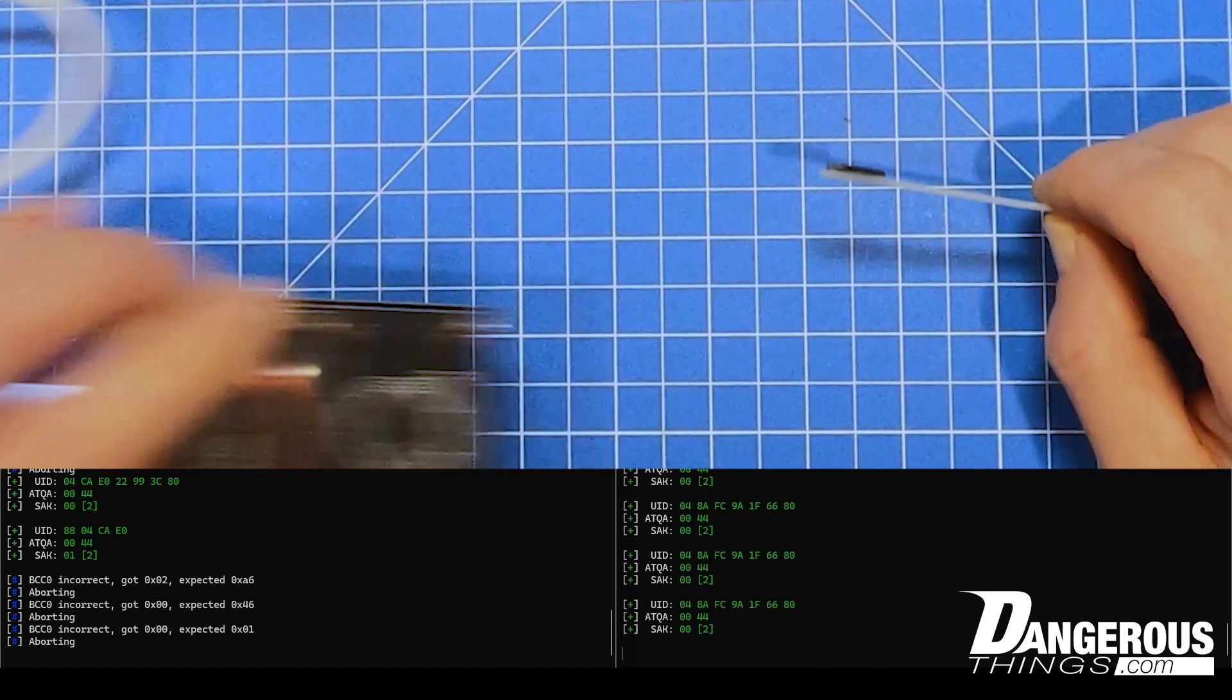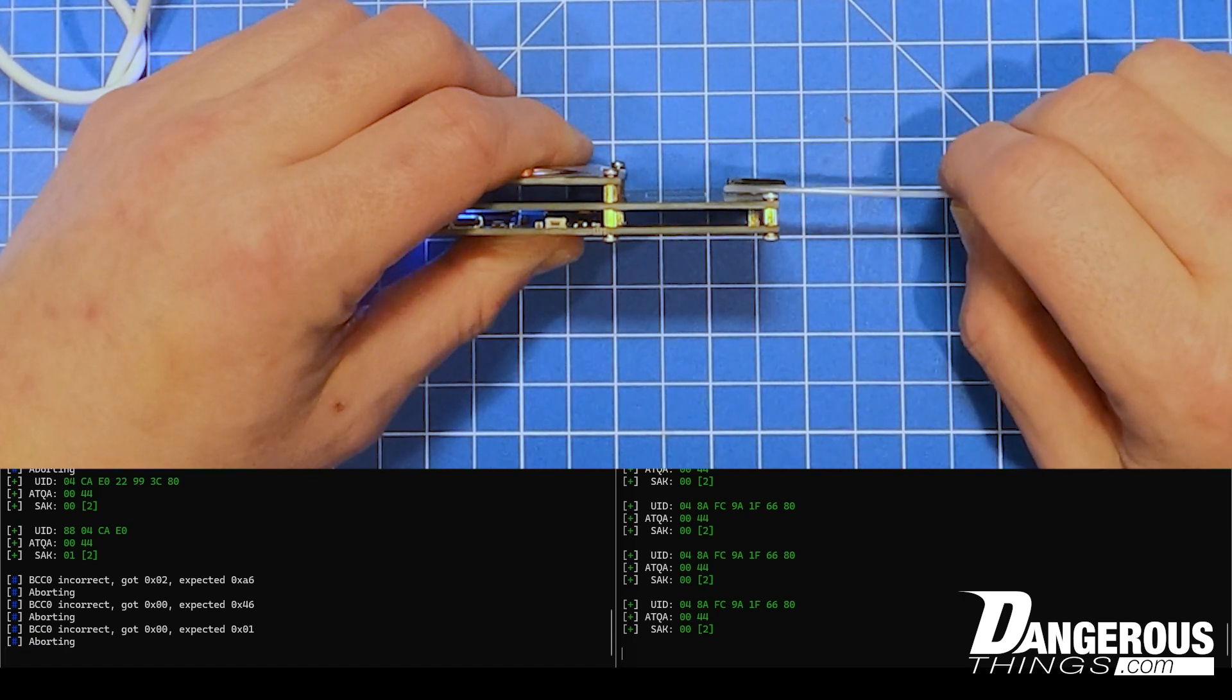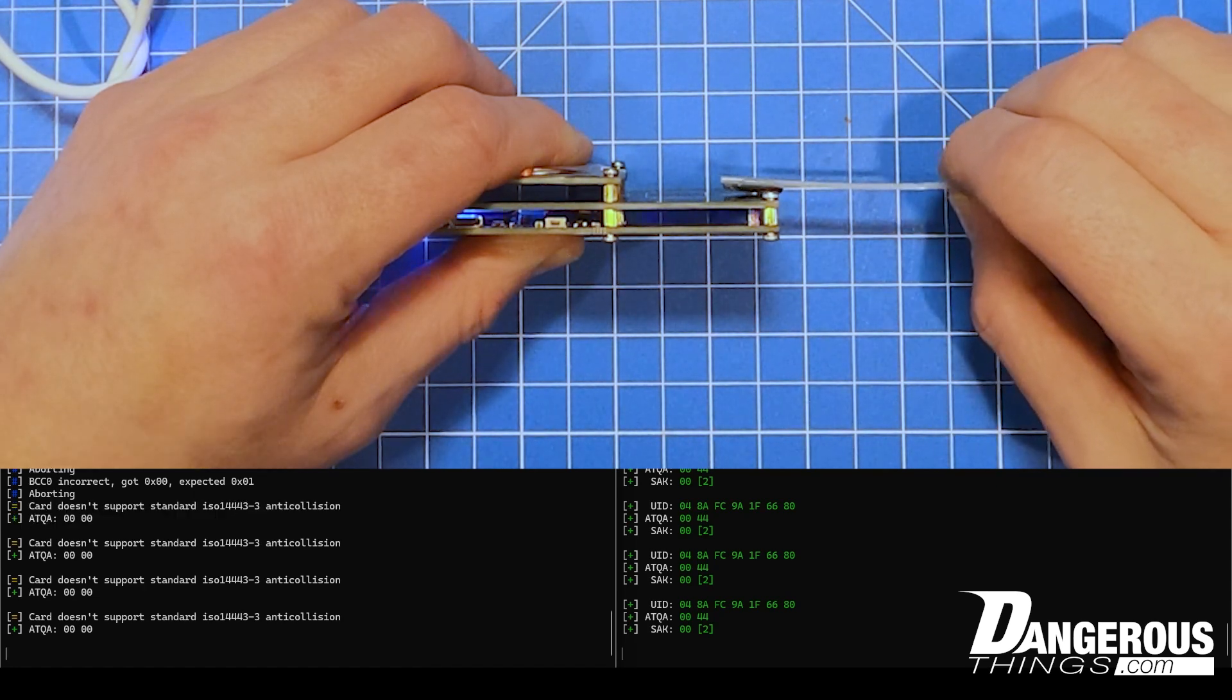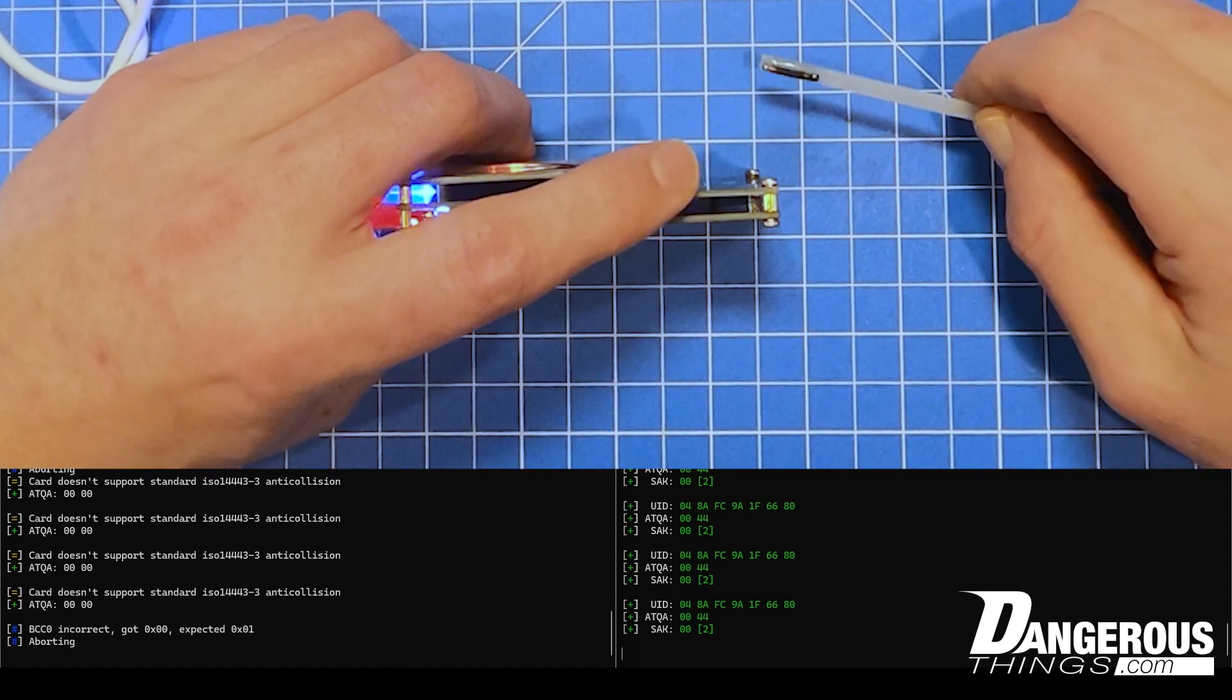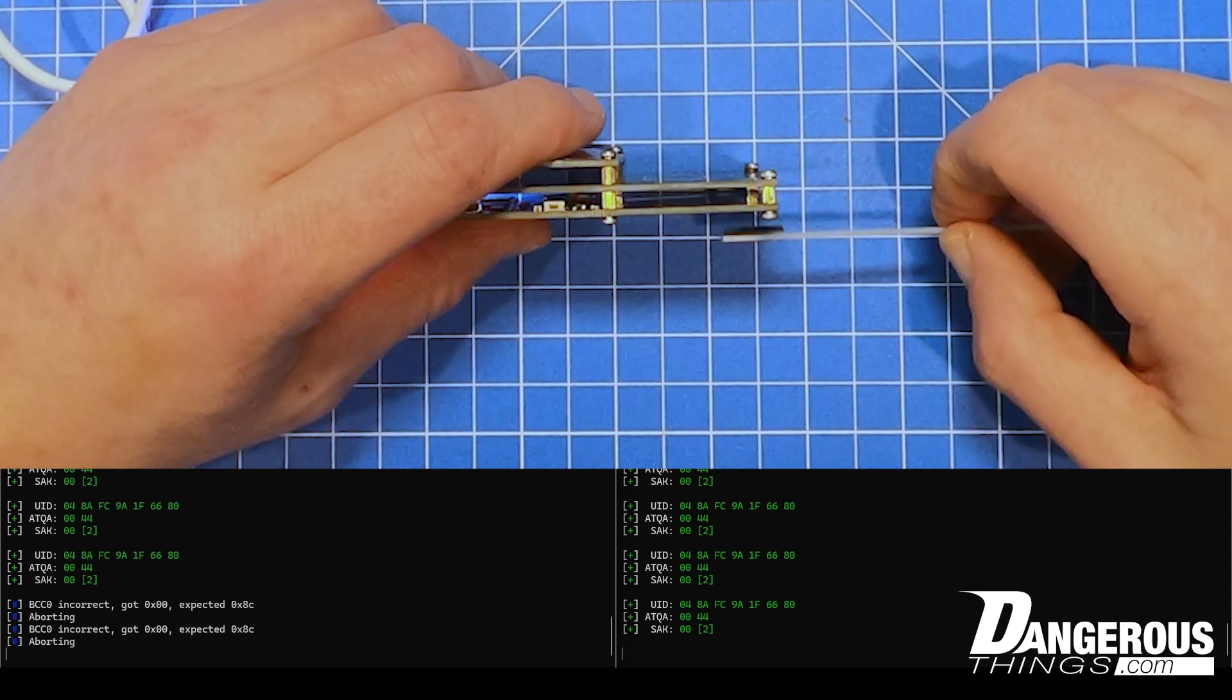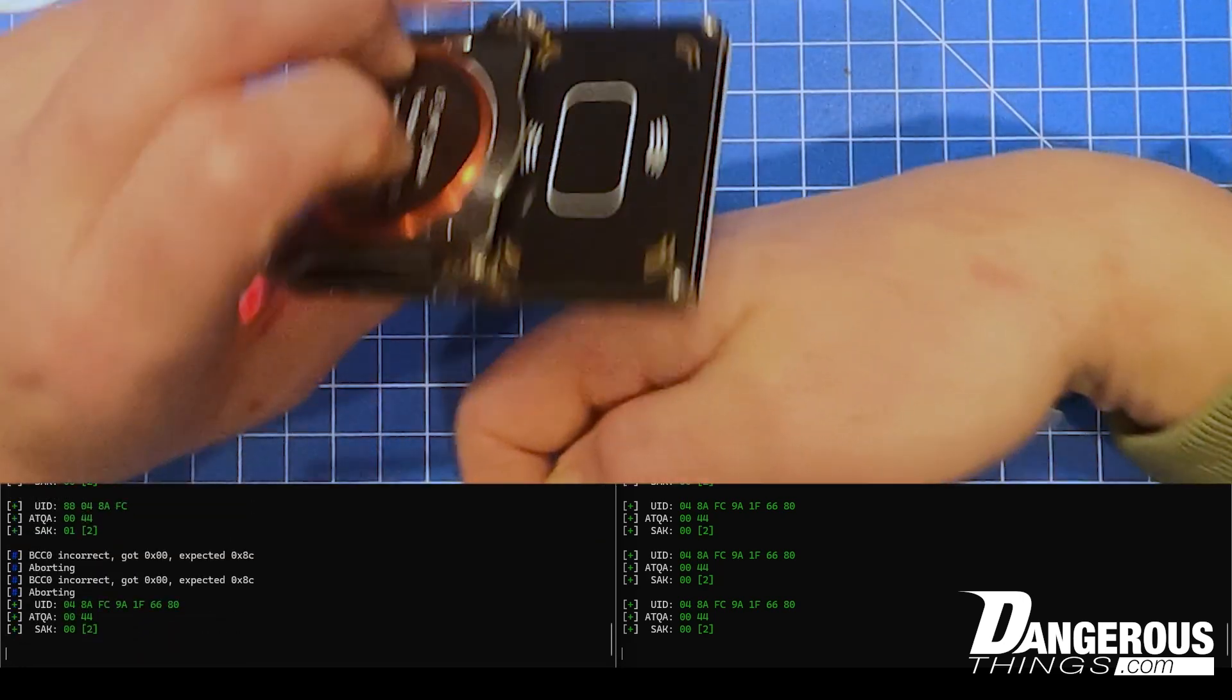Now take the stock Proxmark, we'll do the same thing, we'll approach it and we have to get pretty close. Actually we are touching it. I'm going to flip it around so it gets even closer, so the zip tie's not between. We're getting some reads there but it's not a stable read whatsoever. This illustrates perfectly why under normal circumstances, if you want to read any X-series implant with your Proxmark, you're going to have to approach it from the back side because the actual HF antenna is on the bottom.